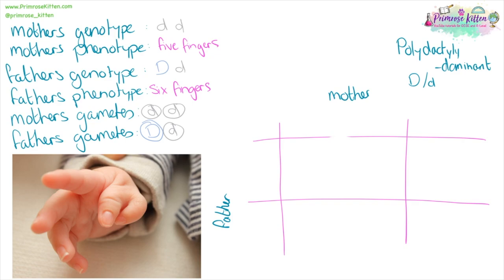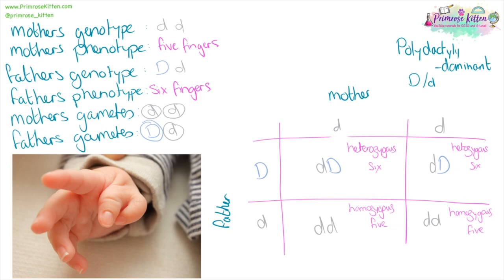Polydactyly is a condition where people get six fingers, and it is dominant. So here we have a mother who is homozygous recessive with five fingers, and a father who is heterozygous with six fingers. Filling in the genetic cross, we can see that if someone has this dominant condition and has one dominant gene, they'll pass it on and 50% of offspring have a 50% chance of also having polydactyly.